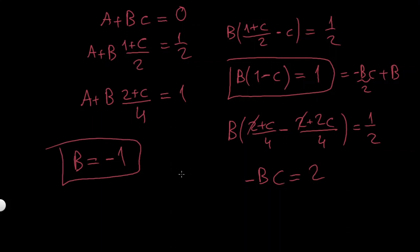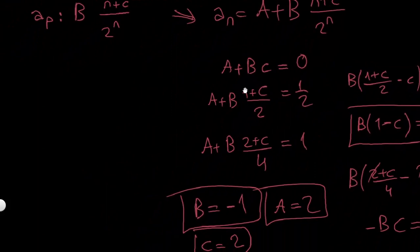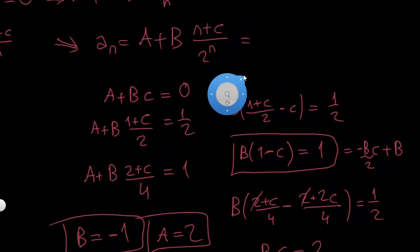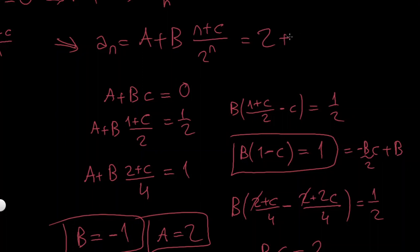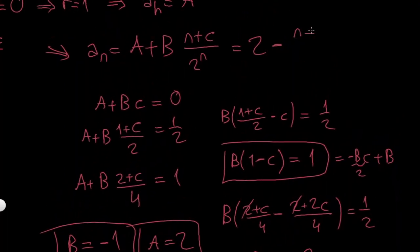With b = -1, it's easy to find c: c equals minus 2 over b, which is 2. And from the first equation, a plus bc = 0 with bc = -2, so a equals 2. Wrapping up: a_n equals 2 minus (n+2) over 2 to the n. This is my answer.